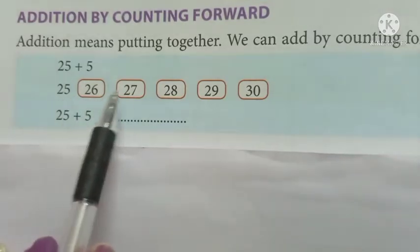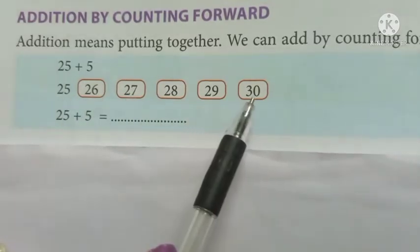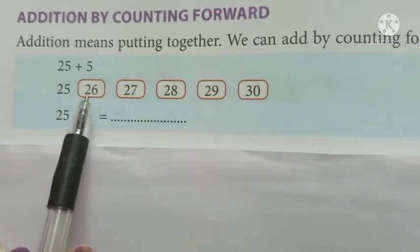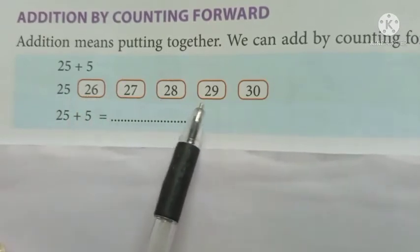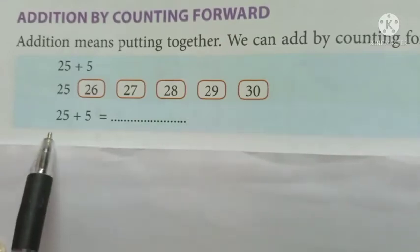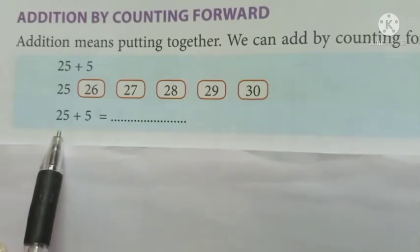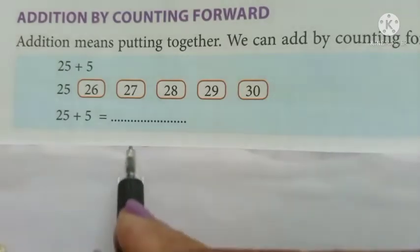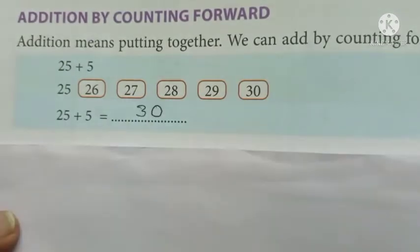25... 1, 2, 3, 4, 5 numbers we have to write. After 25: 26, 27, 28, 29, 30. Therefore we reached at 30. Therefore the answer of 25 plus 5 equals 30. The answer is 30.